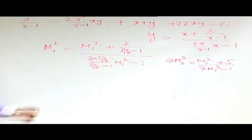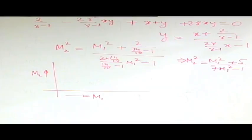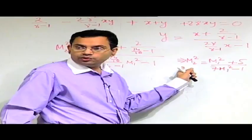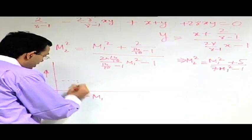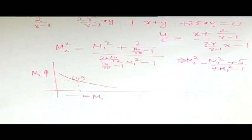We can now make a plot of M2 as a function of M1 from this expression. An important observation is that when M1 = 1, M2 = 1, so (1, 1) is a point on this curve. Making a schematic plot, the curve passes through this point.